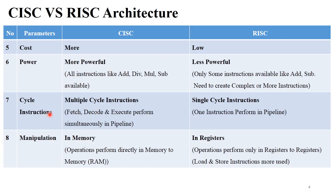The next point is cycle instructions. CISC architecture supports multiple cycle instructions because in the same pipeline, fetch, decode, and execute operations perform simultaneously — one instruction is in execution phase, another in decode phase, and the previous in fetch phase. But in Reduced Instruction Set Computer, it requires single cycle instructions, performing only a single instruction at the same time in the pipeline. So CISC supports multiple cycle instructions and RISC supports single cycle instructions.